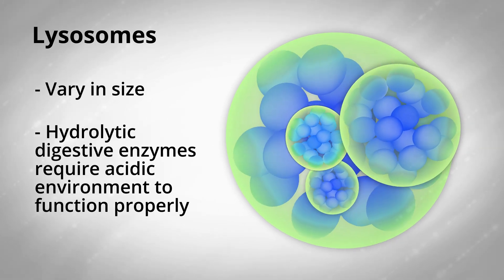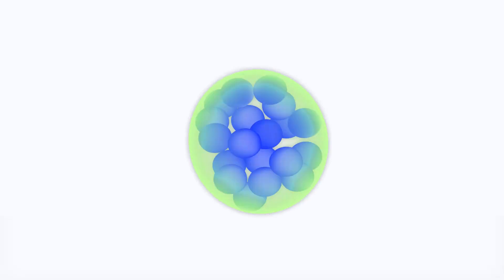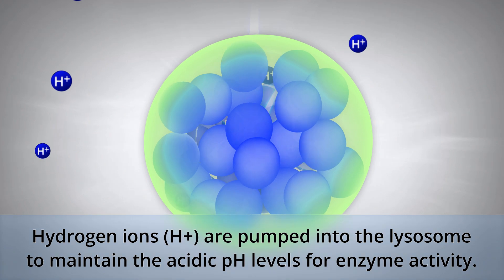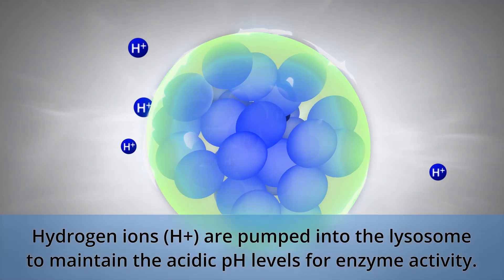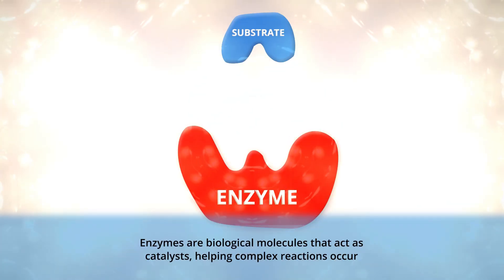There is a complex process of pumping in hydrogen ions across the vesicle membrane to maintain the acidic pH levels necessary for optimal enzyme activity.